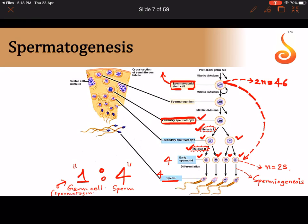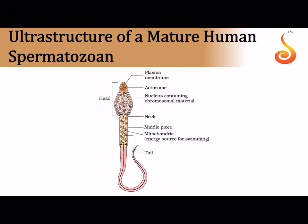The ultrastructure of the human sperm includes the head, neck, middle piece, and tail. The tail has a flagellum which provides motility, helping the sperm swim up the female reproductive tract. In the middle piece the backbone of the sperm is called the axial filament or axoneme, and surrounding it is a spirally coiled ribbon-like mitochondrial arrangement.